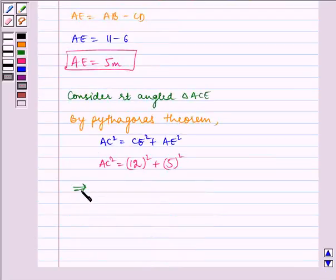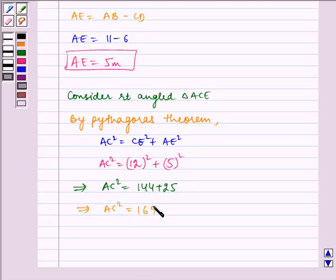This gives AC squared equals 144 plus 25, which equals 169. Therefore, AC equals 13.